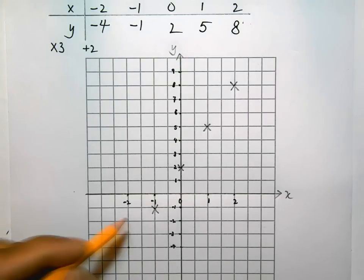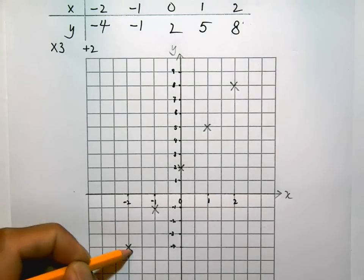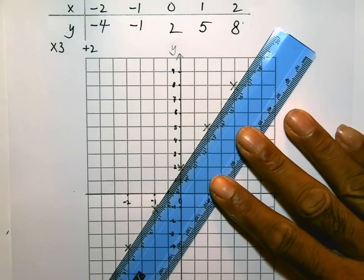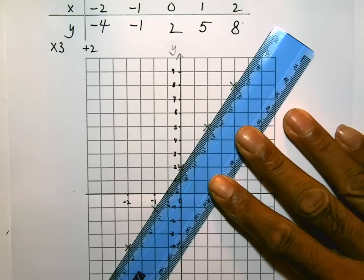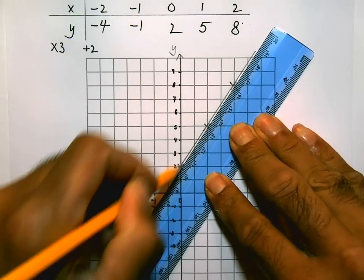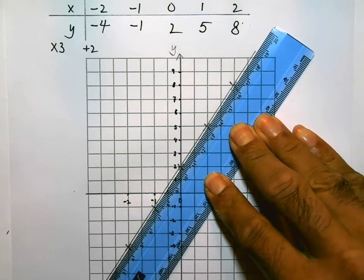Get your ruler. And draw a line that doesn't just join the first to the last point, but it goes all the way through them all. All the way through the full set of points. And for accuracy, make sure you are going through all the points.